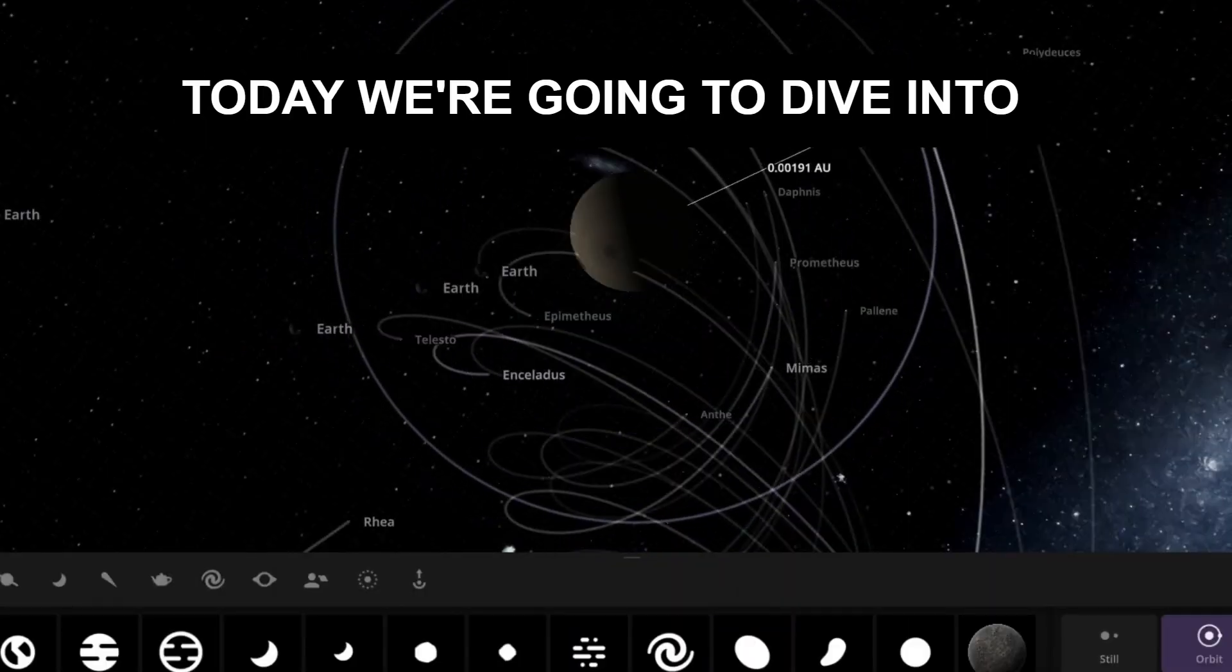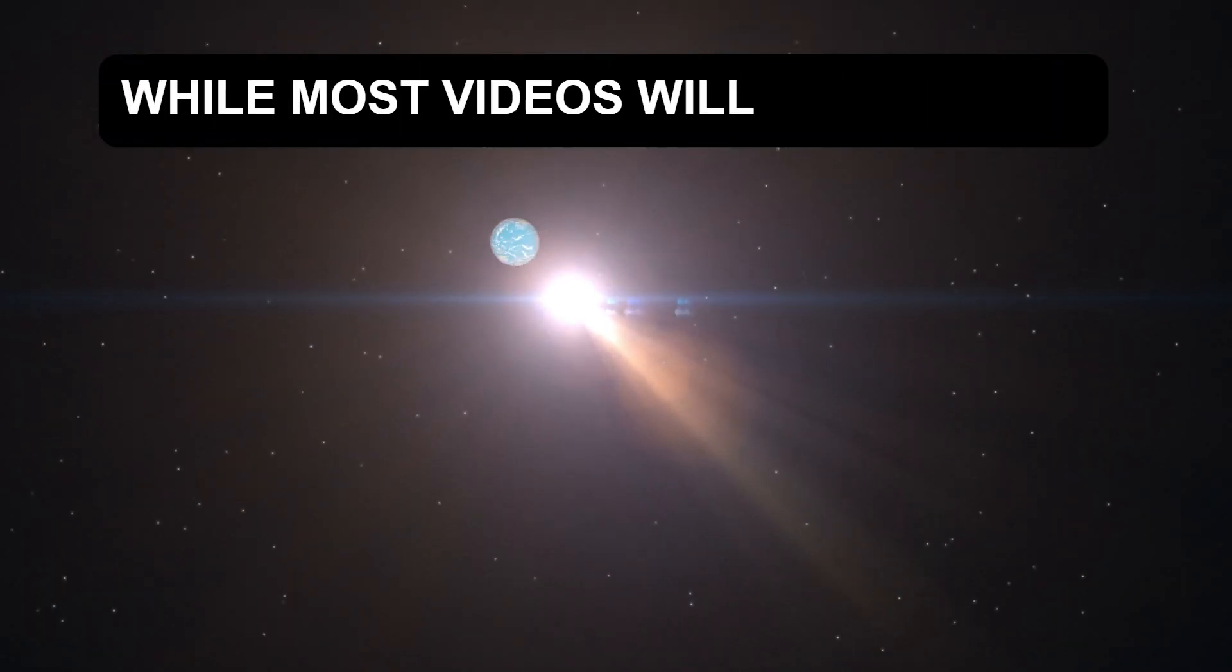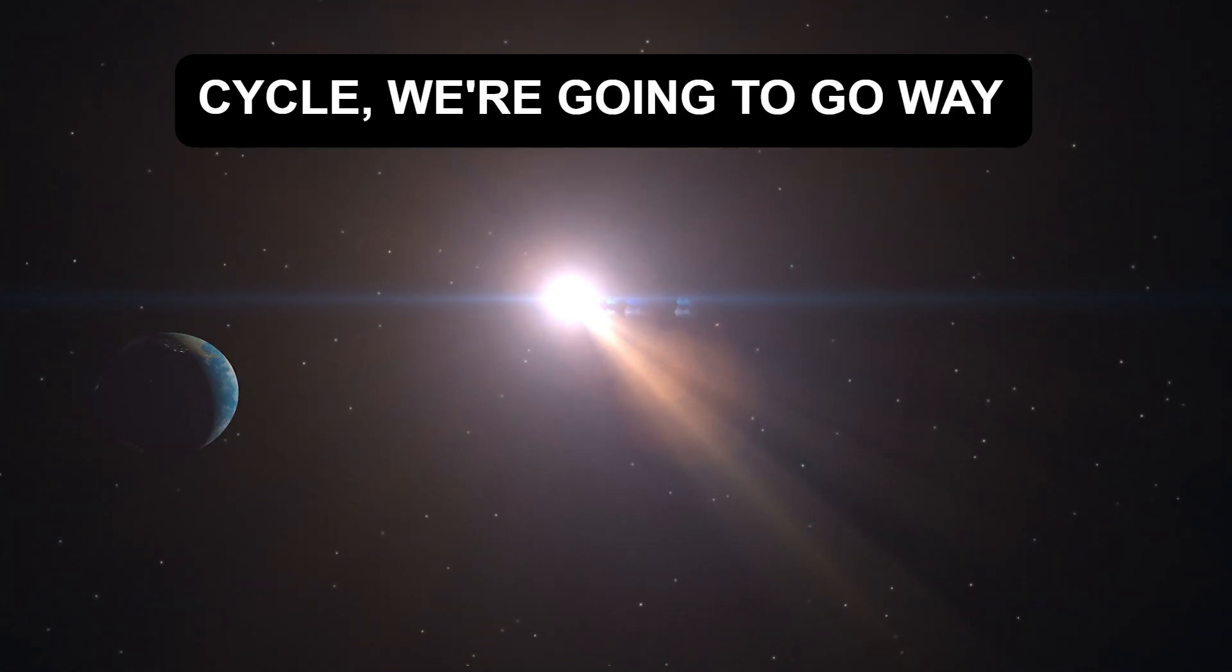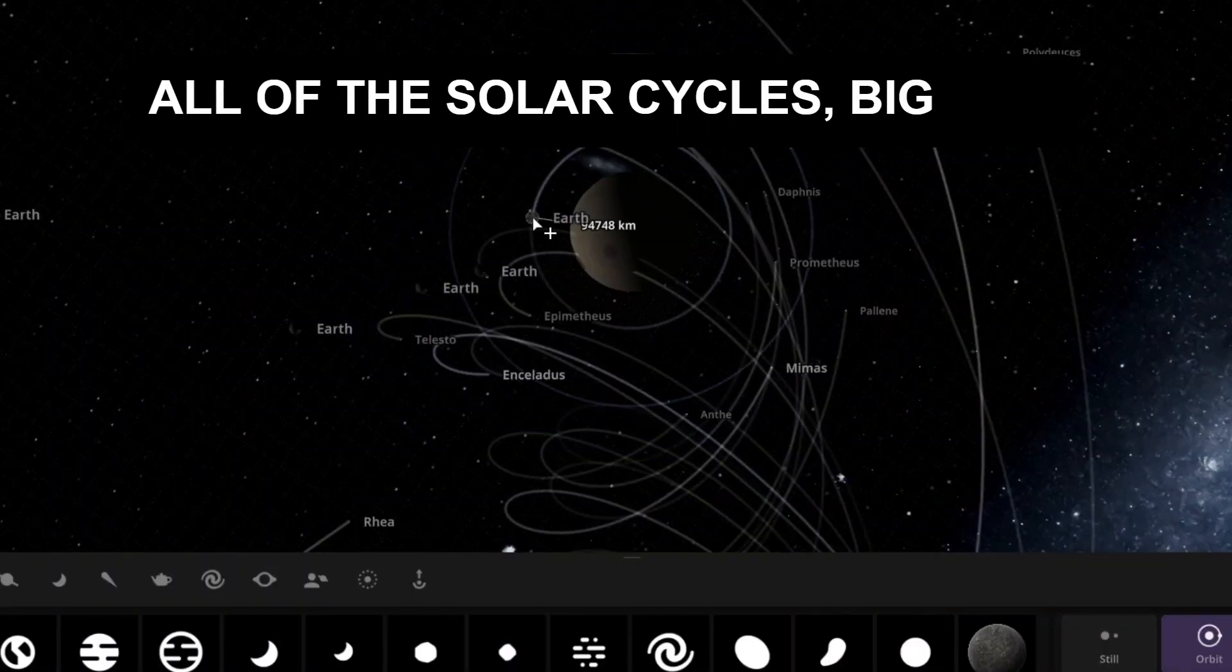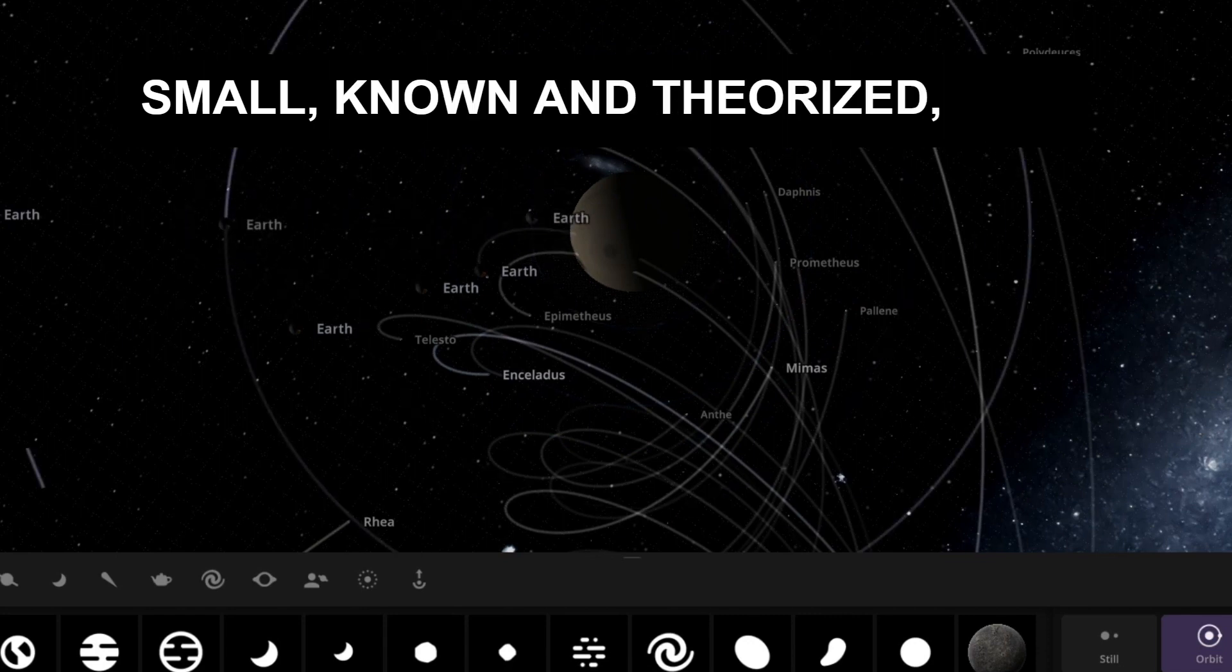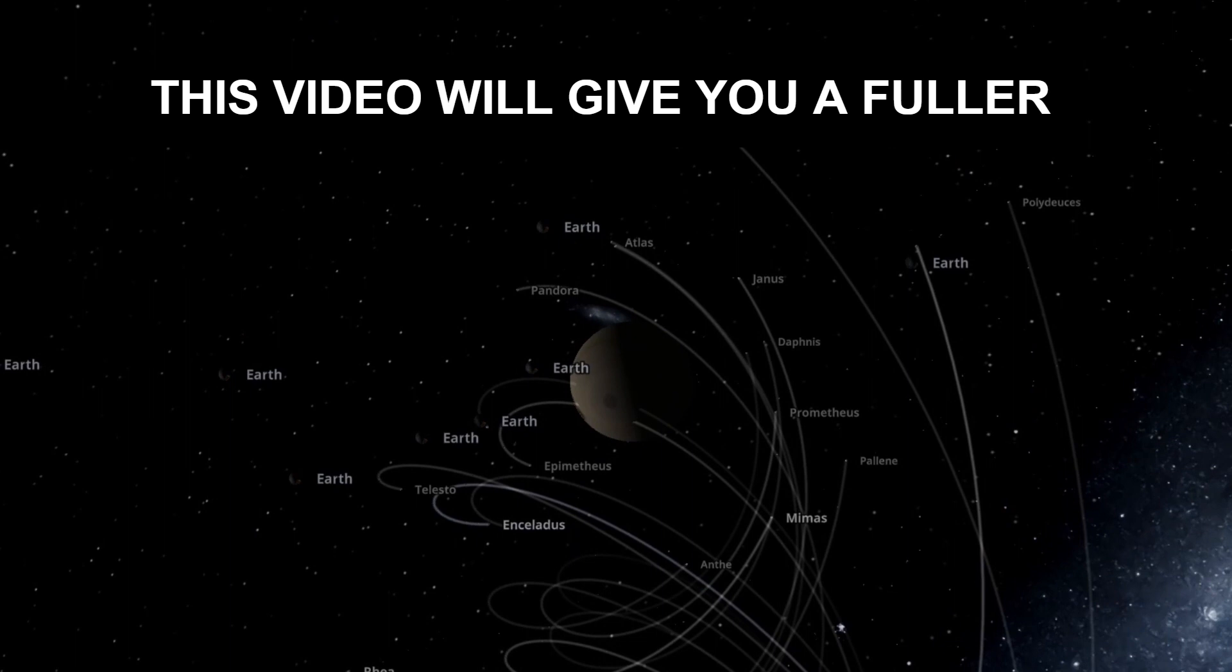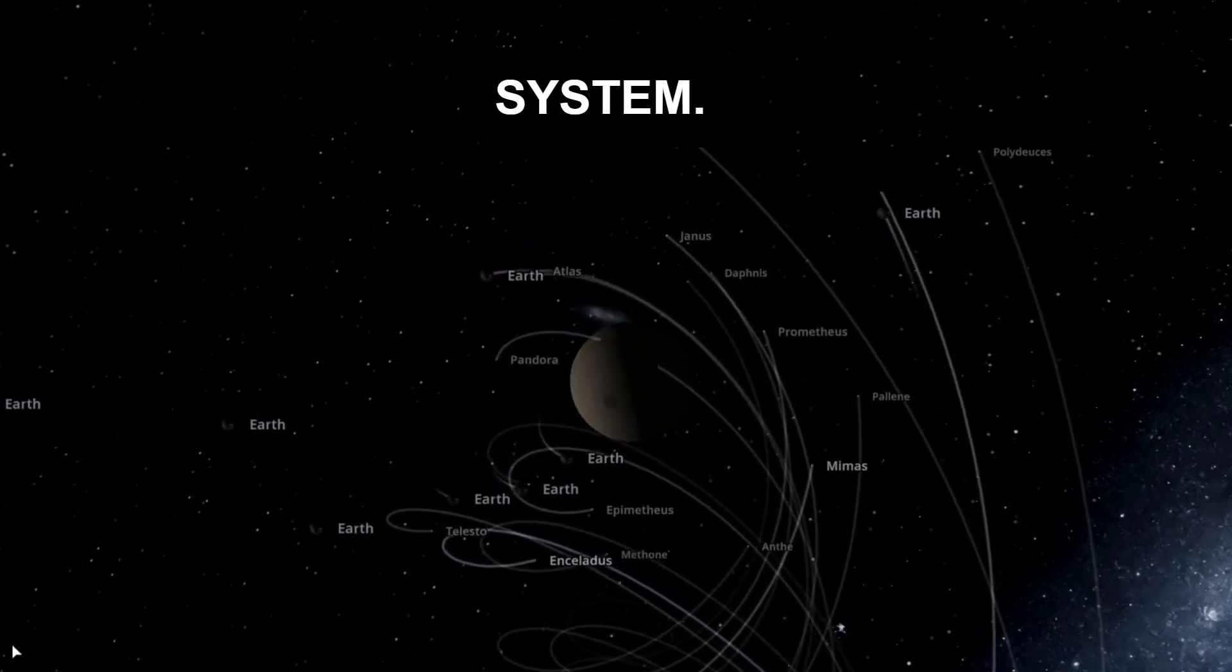All right, welcome brilliant and beautiful people. Today we're going to dive into something a bit more comprehensive than usual. While most videos will only focus on the current 11-year solar cycle, I'm going to go way beyond that. We're going to be talking about all of the solar cycles, big and small, known and theorized, and what it means when they peak together.